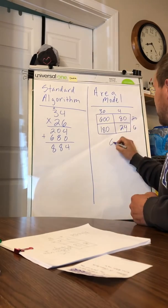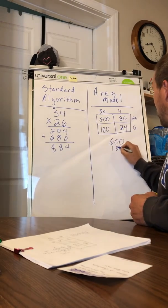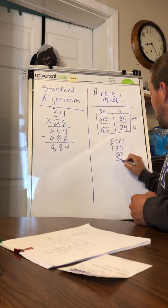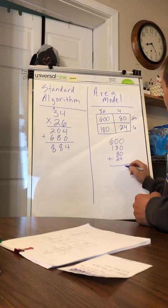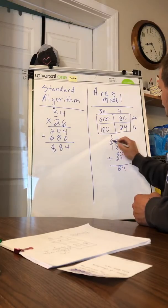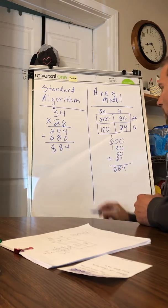Really, any way I want. I'm just going to put them in order from greatest to least and add them up. Eight and eight is 16, plus two is 18, six, seven, eight. I've got 884 over here.